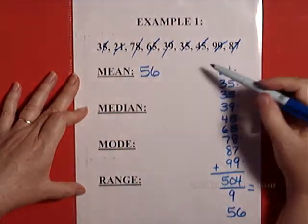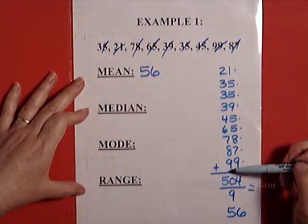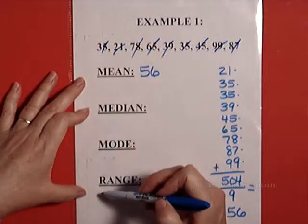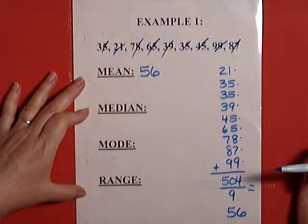And again, I want to stress, if you're just asking for mean, you do not need to put it in ascending order. But because they're asking for these other three things, it's just best to do it once so you don't have to repeat yourself.